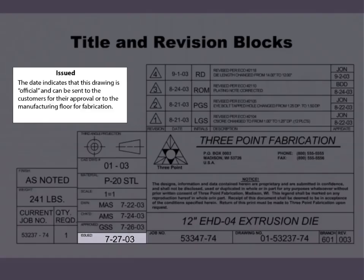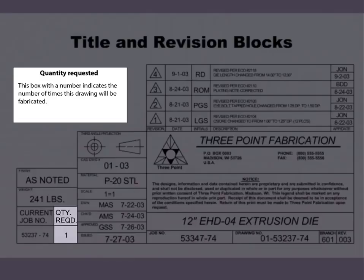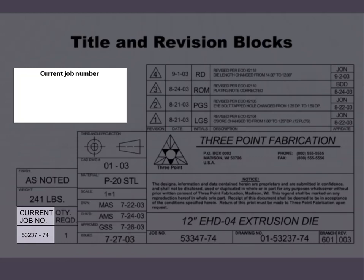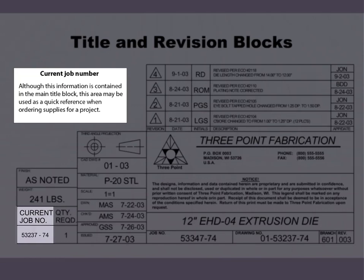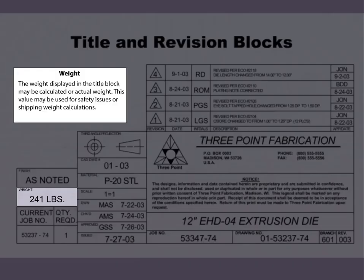Issued: the date indicates that this drawing is official and can be sent to the customers for their approval or to the manufacturing floor for fabrication. Quantity requested: this box with a number indicates the number of times this drawing will be fabricated. Although the current job number is contained in the main title block, this area may be used as a quick reference when ordering supplies for a project.